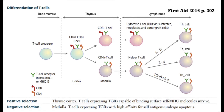Immature T cells are born from pluripotent hematopoietic stem cells in the bone marrow. Before they mature, they leave the bone marrow and migrate into the thymus. The thymus secretes thymopoietins 1 and 2 to promote differentiation of lymphocytes into T cells. Importantly, the thymus atrophies after puberty — visible as a large shadow above the heart on a baby's chest X-ray — but even as it shrinks it can still direct T cell genesis in the lymph nodes.